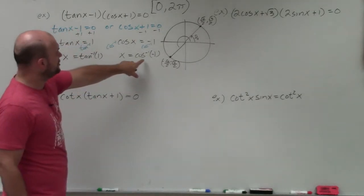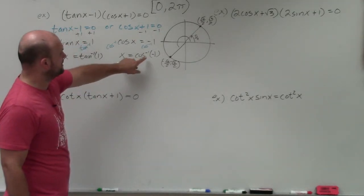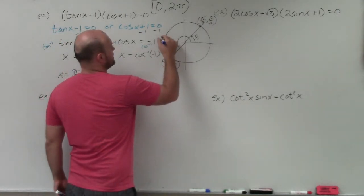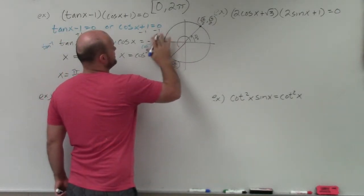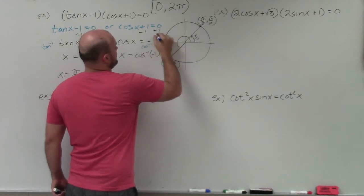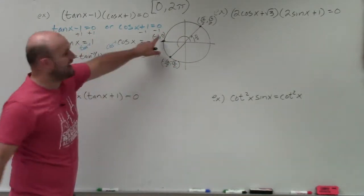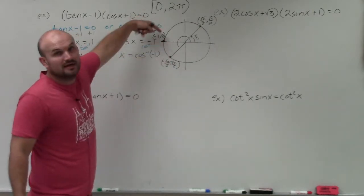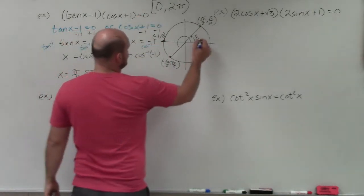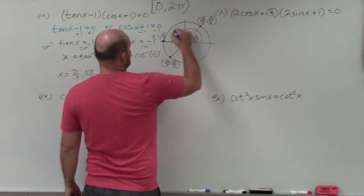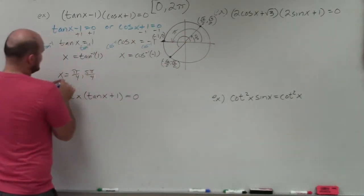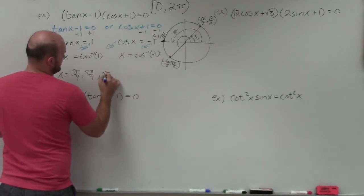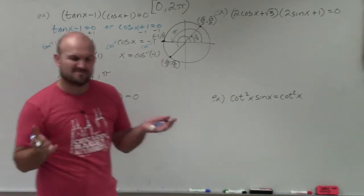Now we figure out: what angle gives cosine equal to negative 1? There's only one angle where the x-value equals negative 1, which is the point (−1, 0). So cosine of this angle is negative 1, and that angle is π. Therefore x equals π/4, 5π/4, and π.